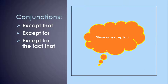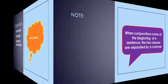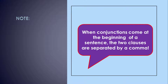The conjunctions except that, except for, and except for the fact show an exception. Note: when conjunctions come at the beginning of a sentence, the two clauses are separated by a comma.